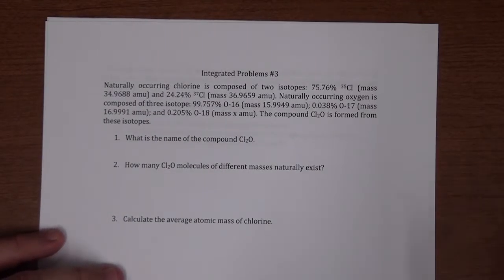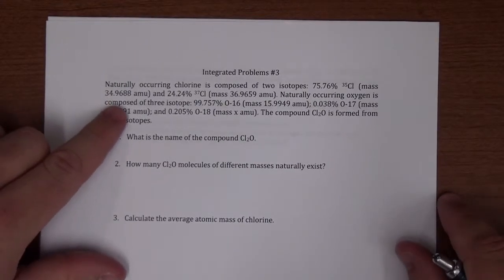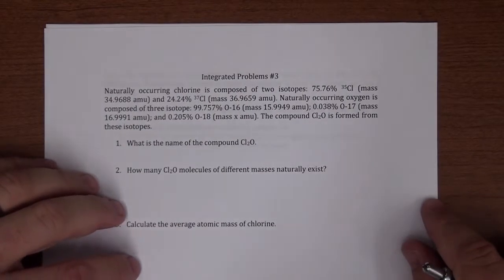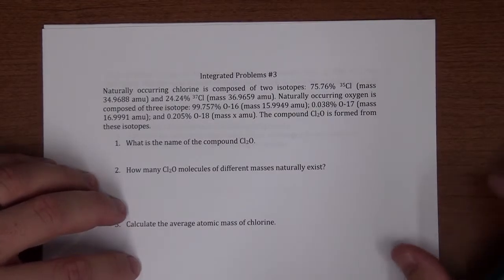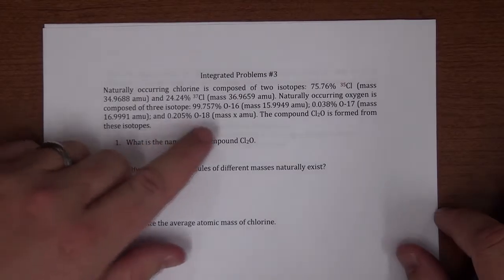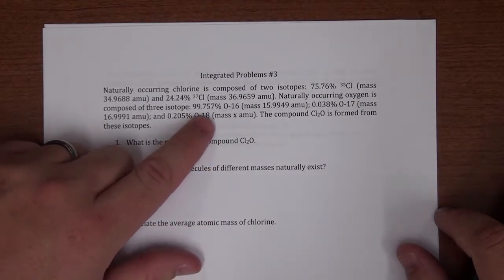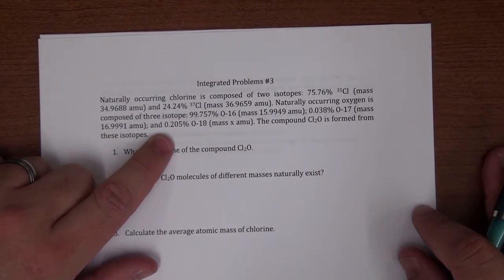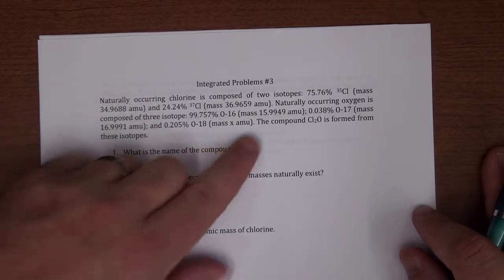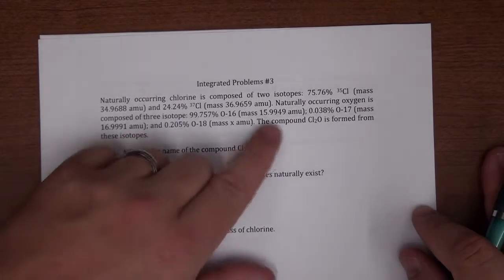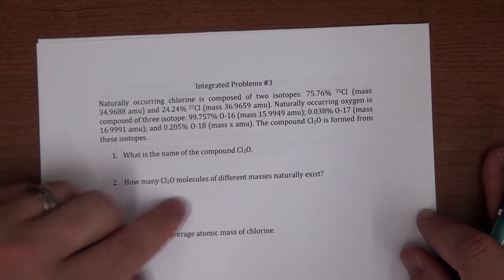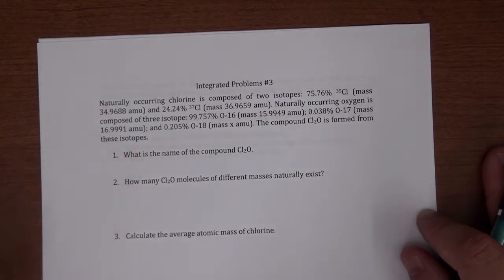Naturally occurring chlorine is composed of two isotopes: 75.76% chlorine-35 with a mass of 34.9688 AMUs, and 24.24% chlorine-37 with a mass of 36.9659 AMUs. Naturally occurring oxygen is composed of three isotopes: oxygen-16 at 99.757%, oxygen-17 at 0.038%, and oxygen-18 at 0.025%. We have the masses of oxygen-16 and oxygen-17 but not yet the mass of oxygen-18. A compound Cl₂O is formed from these isotopes.